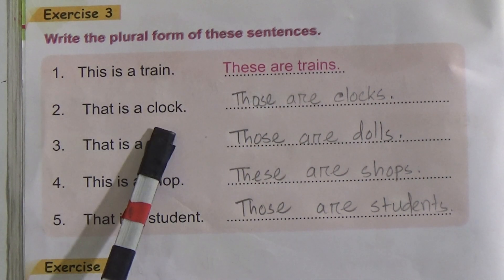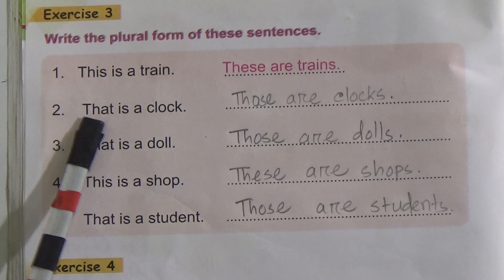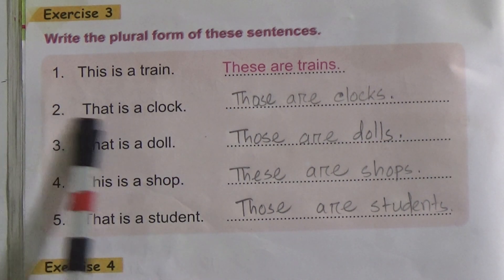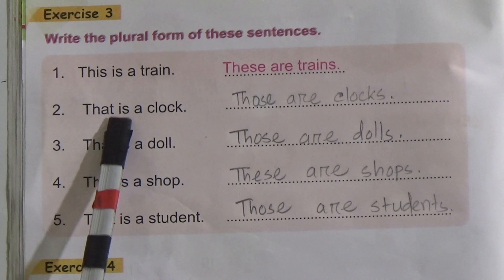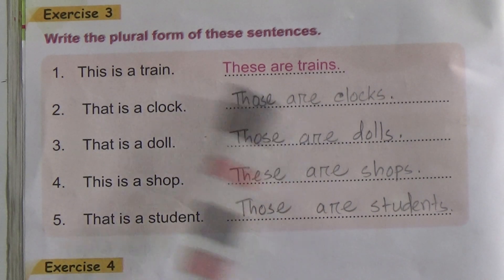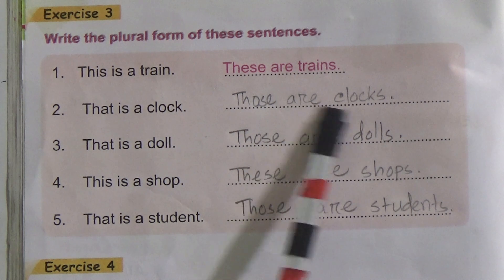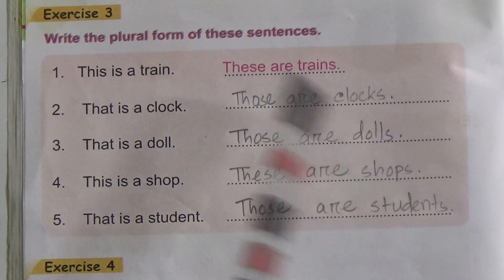That is a clock. 'That's' plural form is 'those'. It is singular, so its plural form uses 'are'. So the answer would be 'those are clocks' — C-L-O-C-K-S. Plural.